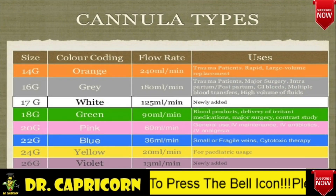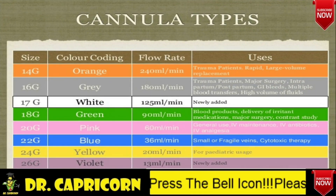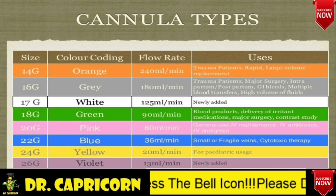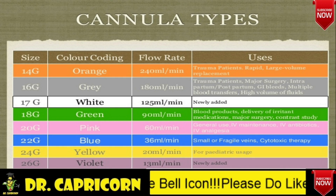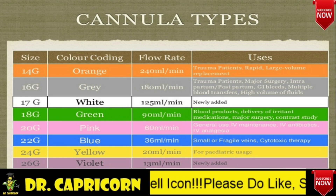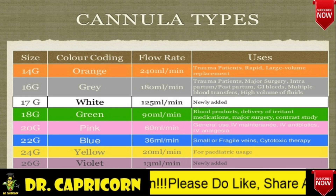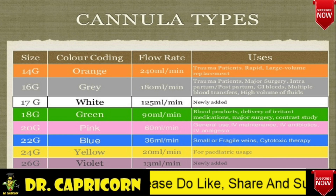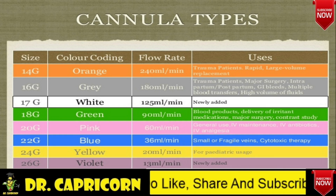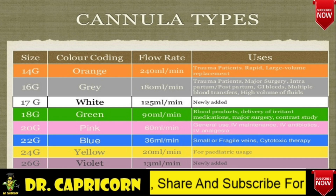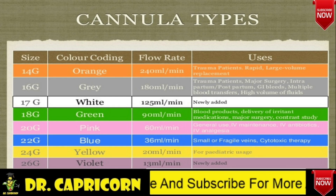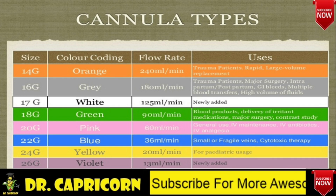Now let's see their uses and flow rates. Remember, as the gauge size of cannula increases, diameter of cannula decreases and flow rate decreases. Orange color cannula is of the least size, having the highest flow rates, whereas the violet one has the lowest flow rate because of its large gauge size.